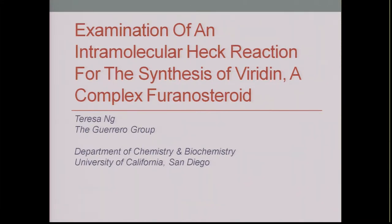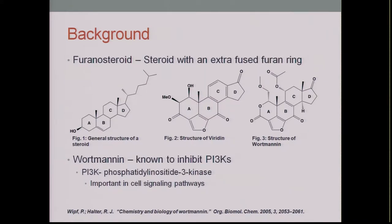We are working on the synthesis of viridin, a complex furanosteroid. As background, viridin is a furanosteroid — a steroid with an extra fused furan ring. Looking at figures 1 and 2, you can see the general steroid structure compared to viridin, where the ABCD rings are the same except viridin has an extra furan ring between the A and B rings.